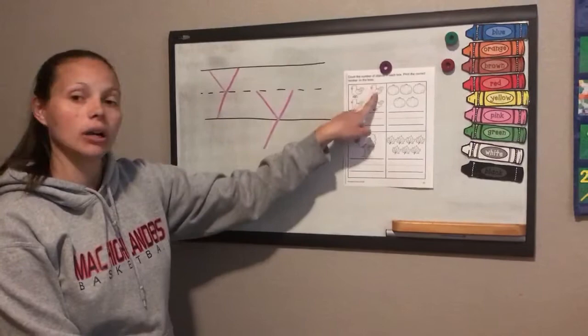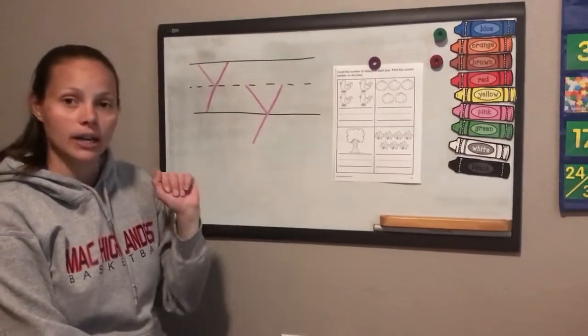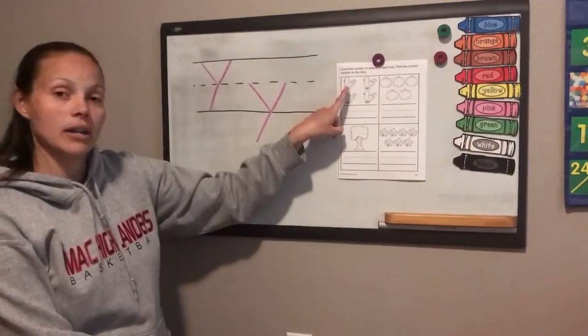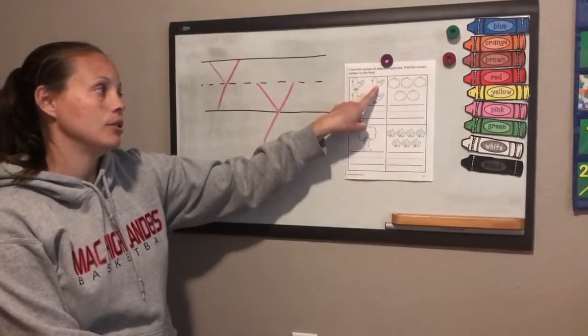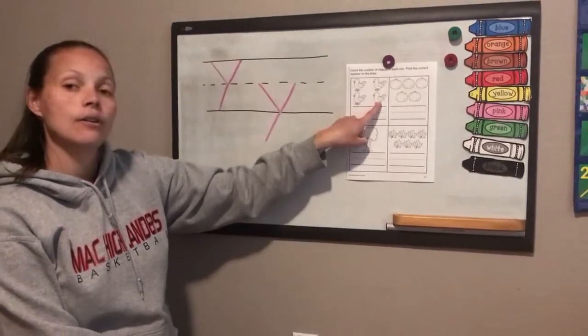So we're going to count our birds and write our number here. Let's look up here and count them together. Ready? One, two, three, four.